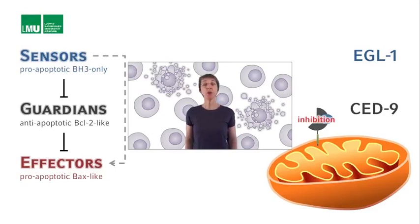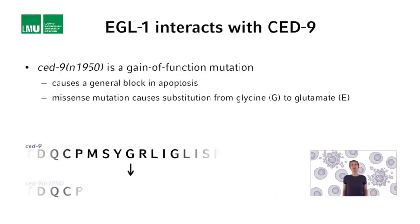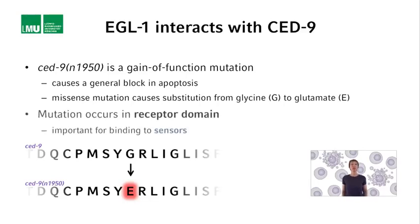This notion is supported by the following finding. The SET9 gain-of-function mutation N1950, which causes a general block in apoptosis, is a missense mutation that changes a single amino acid in the SET9 protein sequence. Specifically, it is a glycine to glutamate substitution at position 169 of the SET9 sequence. This amino acid is within a conserved region of the SET9 protein referred to as the receptor domain of the guardians.